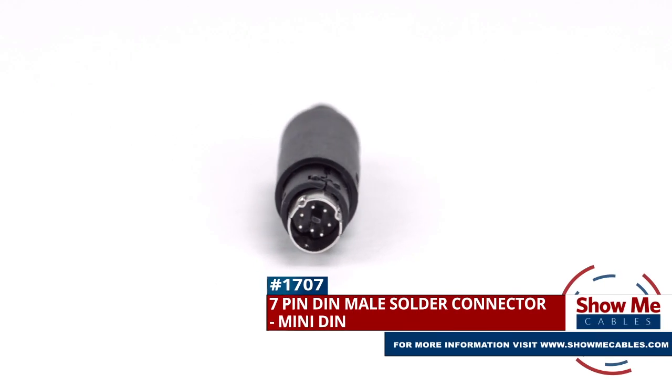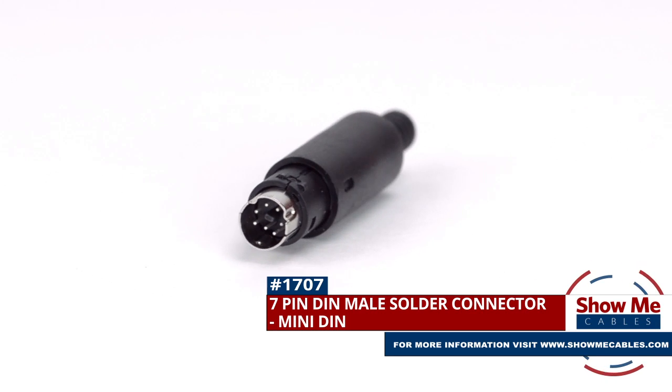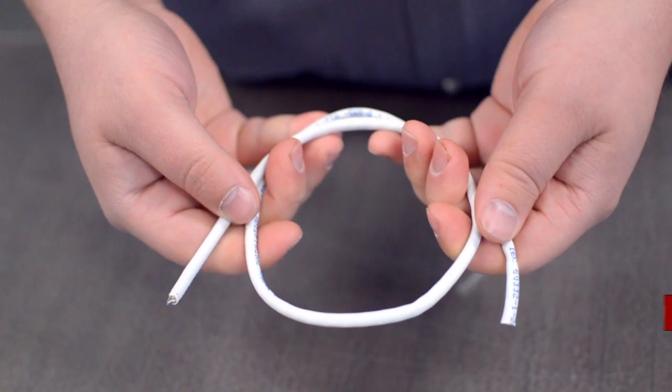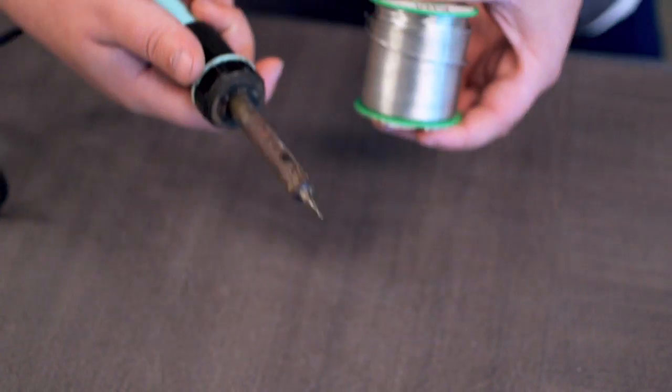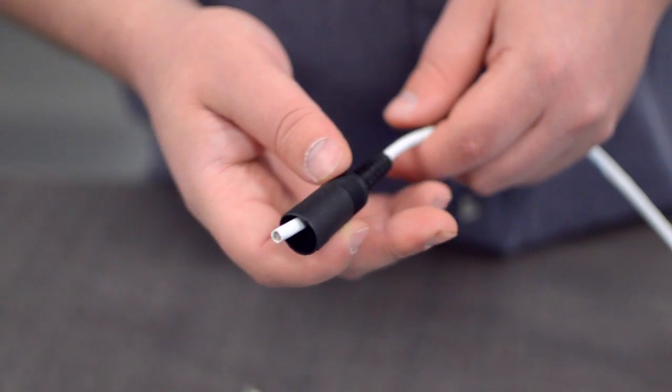This is the 7-pin Mini-DIN male solder connector. To install, you will need the following items: low voltage cable, wire strippers, solder and soldering iron, and the DIN connector. Start by inserting the plastic boot over the jacket.